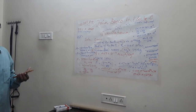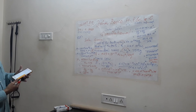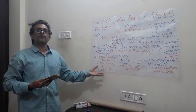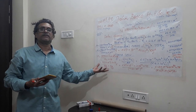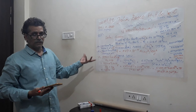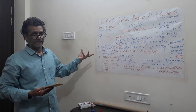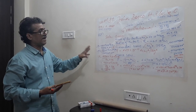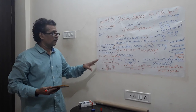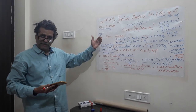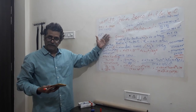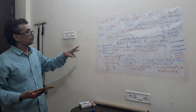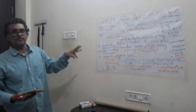Students sometimes fail to do the calculation and lose marks because they don't know the arithmetic. In the gravitational topic, calculation must be done thoroughly. The indices chapter, which you have studied, is fundamental here — you must know it well.